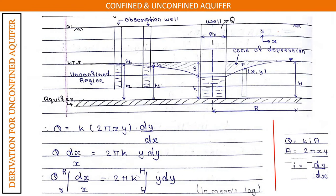Substituting into q = k × i × a: q = k × (dy/dx) × 2πxy. Rearranging, we bring x terms to the left and y terms to the right: q dx/x = 2πk y dy.